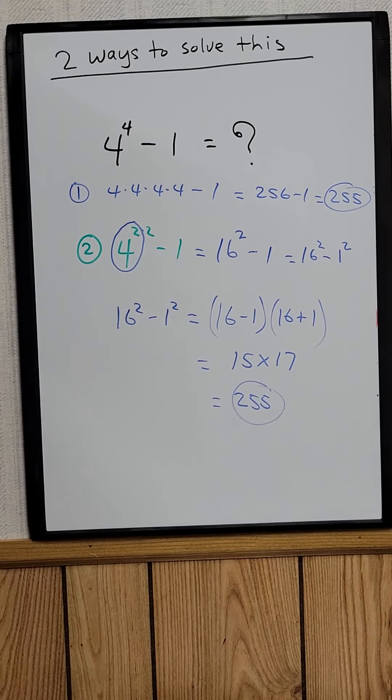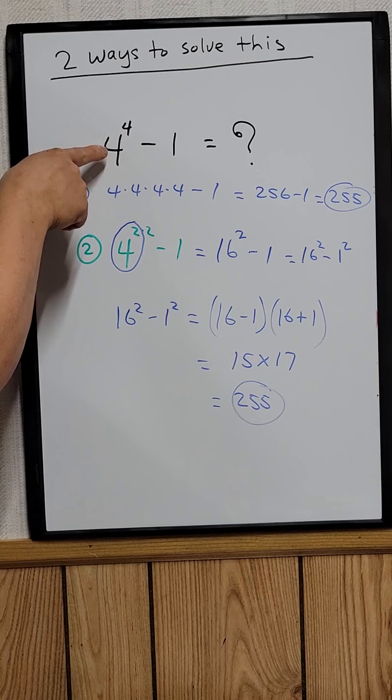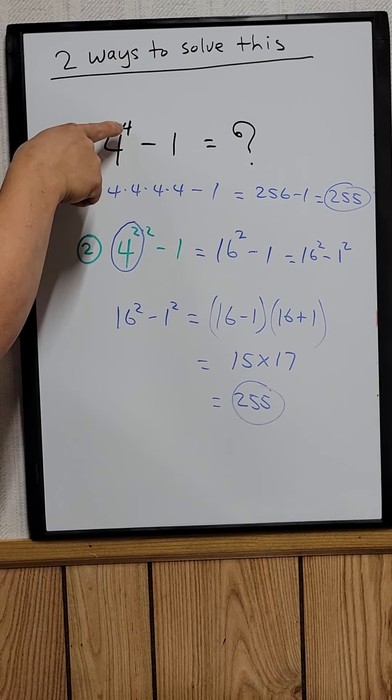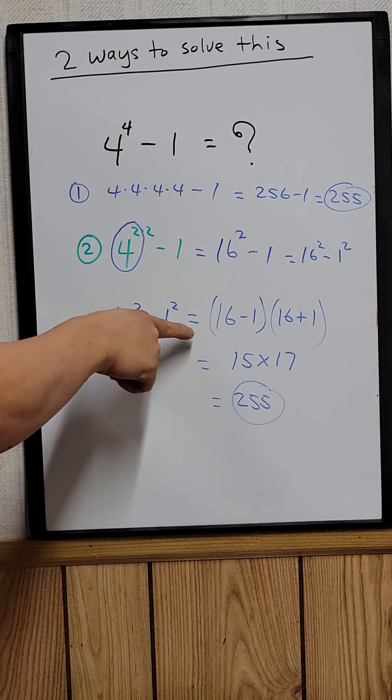So the second method would be a better method if the exponent is a larger exponent. It's easier to do the second method.